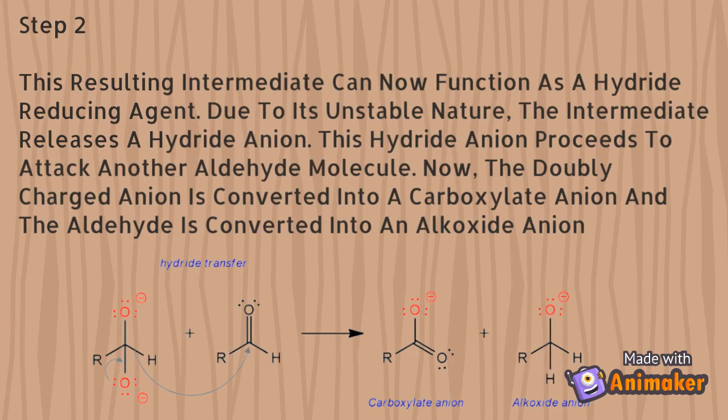Step number 2. This resulting intermediate can now function as a hydride reducing agent. Due to its unstable nature, the intermediate releases a hydride anion, and this hydride anion proceeds to attack another aldehyde molecule.